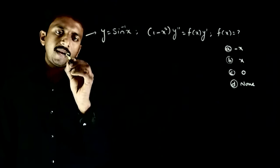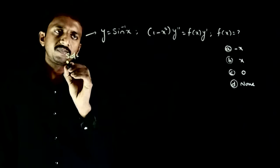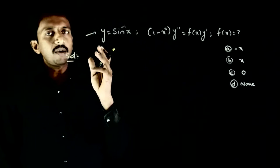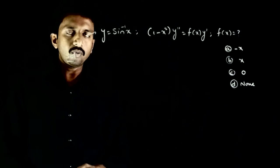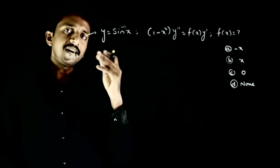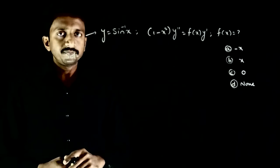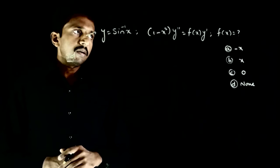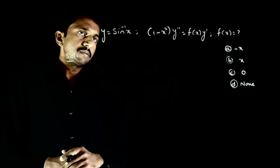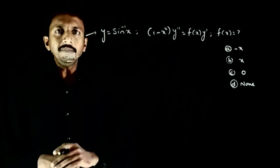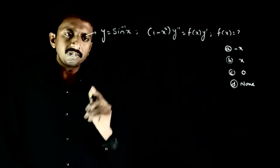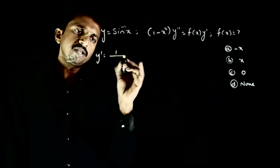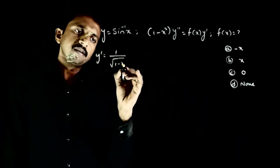Let us try to analyze this function. y is equal to sin inverse of x, so y dash is equal to the differentiation of sin inverse x, which is 1 by root of 1 minus x squared.